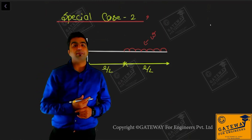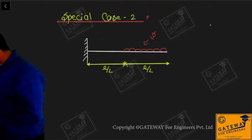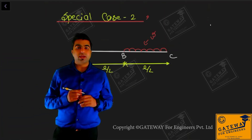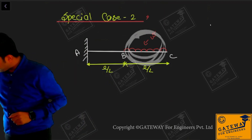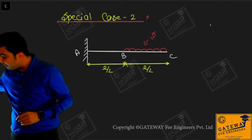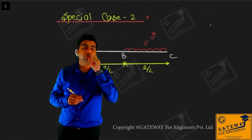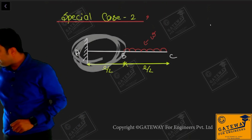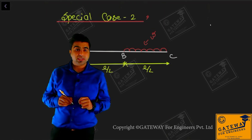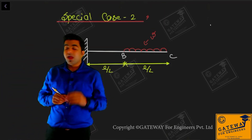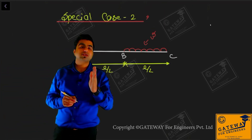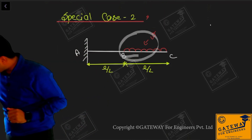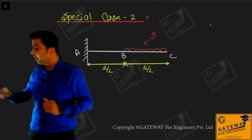Loading is 2 degrees less than bending moment. Suppose this is point A, B, C. In the portion BC, loading degree is zero (UDL), so bending moment degree will be two - meaning bending moment in BC will be parabolic. In AB portion, bending moment degree will be one. So in BC, bending moment diagram is parabolic (degree 2), and in AB, bending moment diagram is a straight line (degree 1).